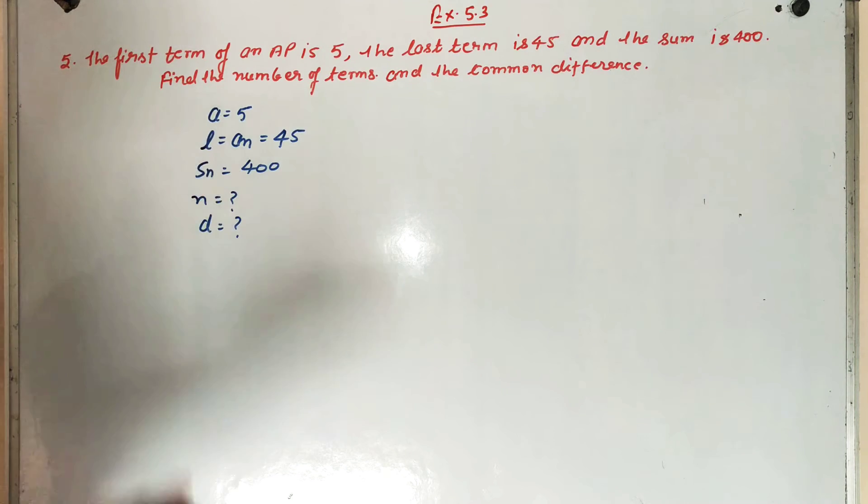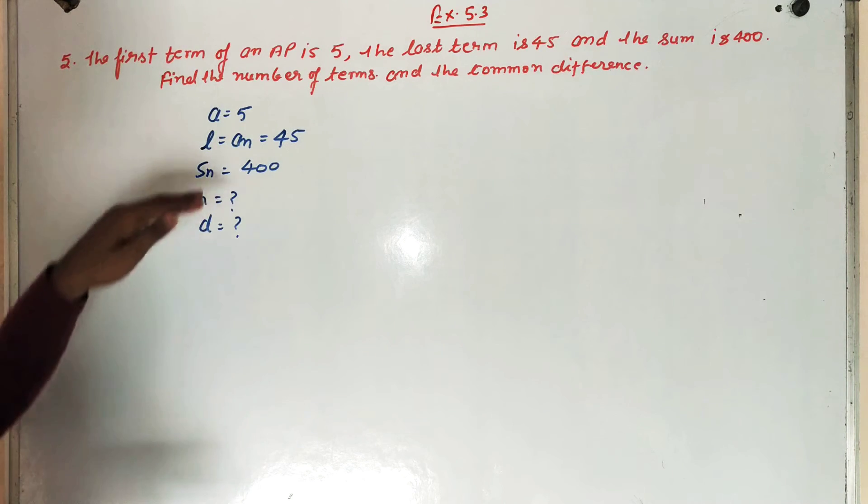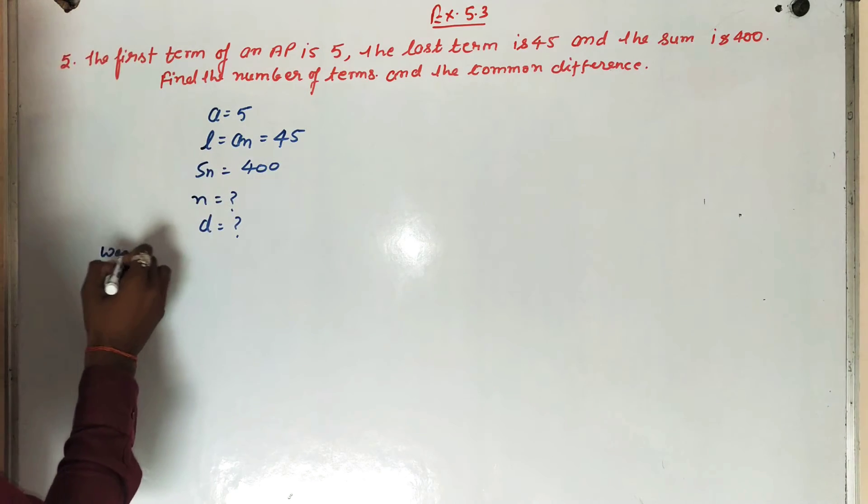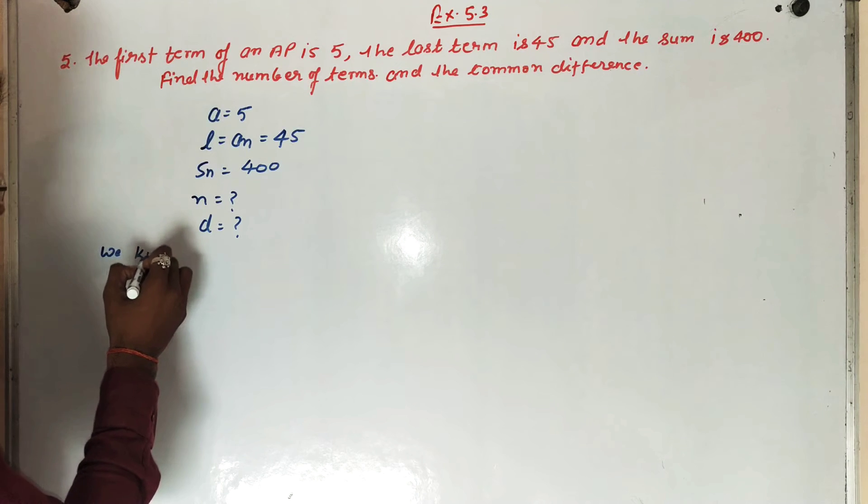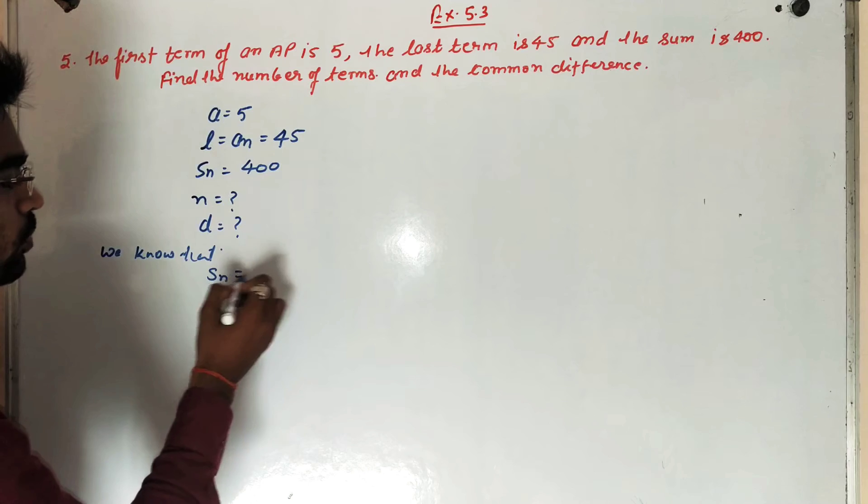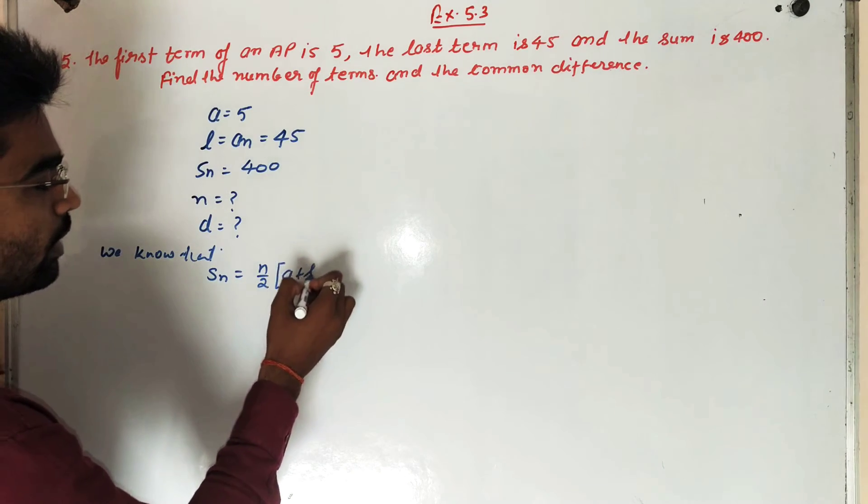when we have first term and last term, we have a formula. We know that SN is equal to N upon 2, A plus L.